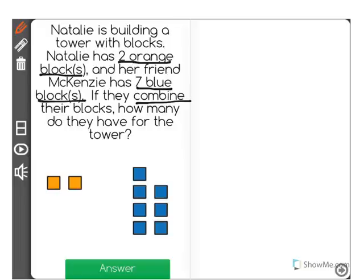how many do they have for the tower? So here I can see Natalie's blocks, the two orange blocks, and here are Mackenzie's. She has seven blue blocks.